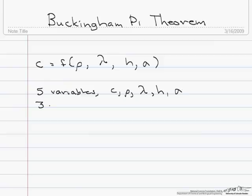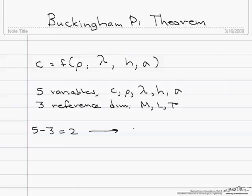We have three reference dimensions: M, L, and T. So five minus three equals two. We should have two pi groups.